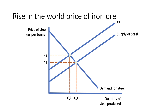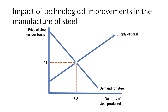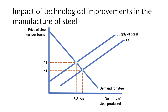Third example: the impact of technological improvements in steel manufacture. Better, cutting-edge technology helps increase productivity and efficiency, reduces waste, and therefore reduces unit costs of supply. Hence the supply of steel shifts outward to S2, meaning the price of steel comes down from P1 to P2 and quantity expands from Q1 to Q2.